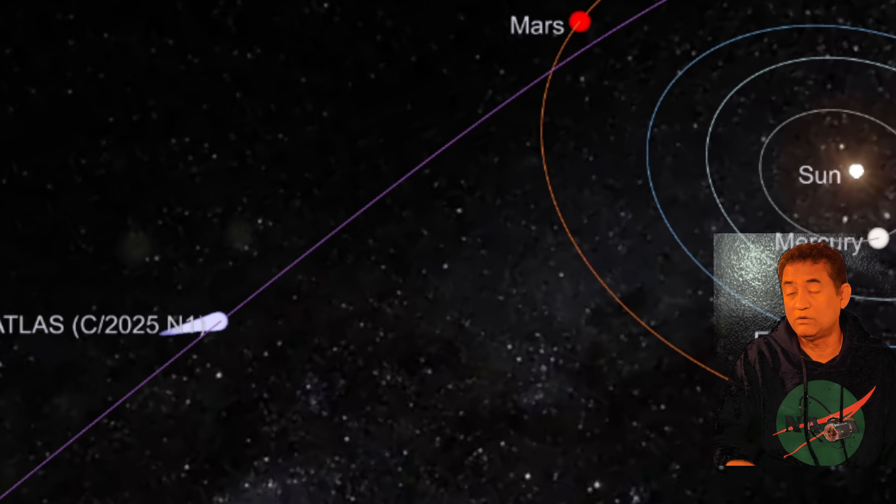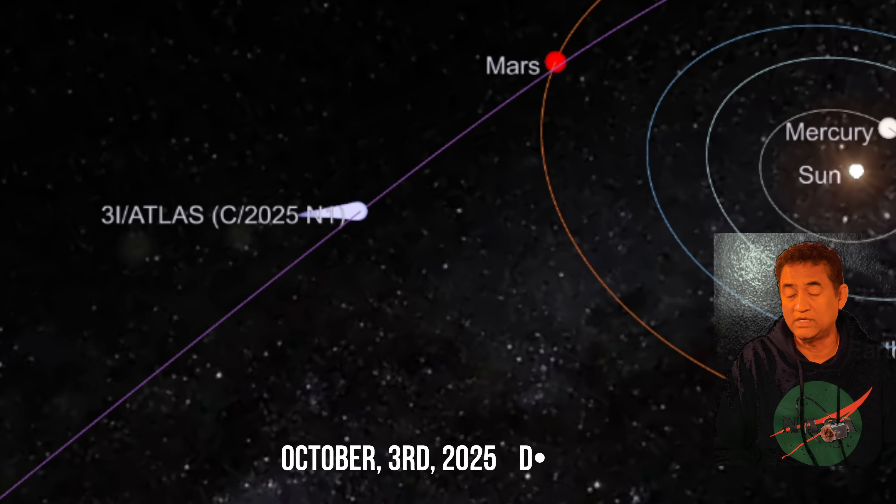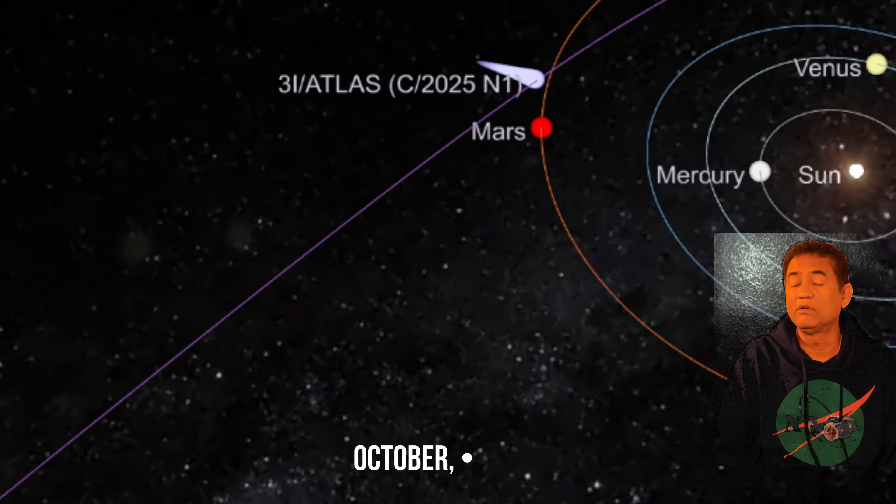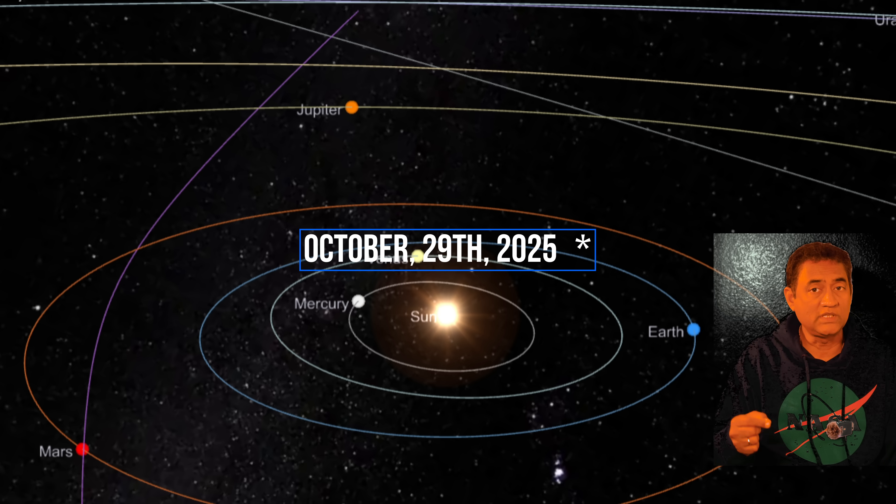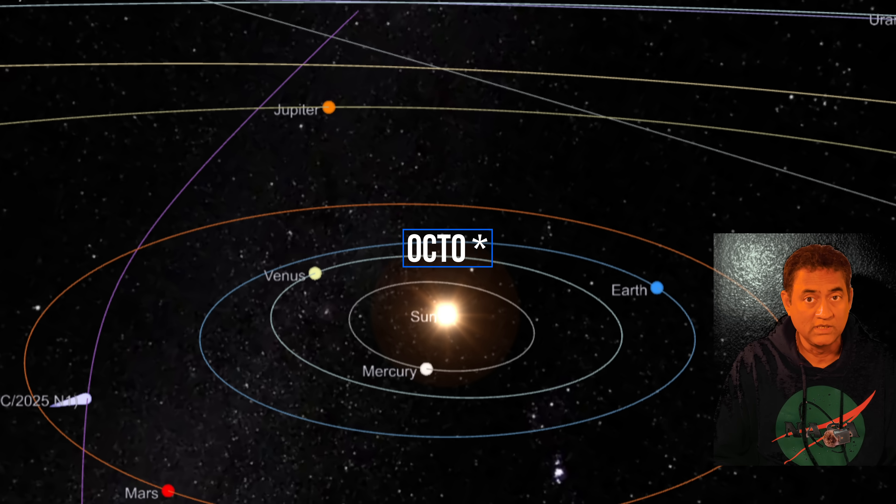So when will we see it? On October 3rd, 2025, Atlas is going to pass Mars at 0.19 astronomical units. October 29th, it will reach perihelion, its closest point to the Sun, which is 1.36 astronomical units.